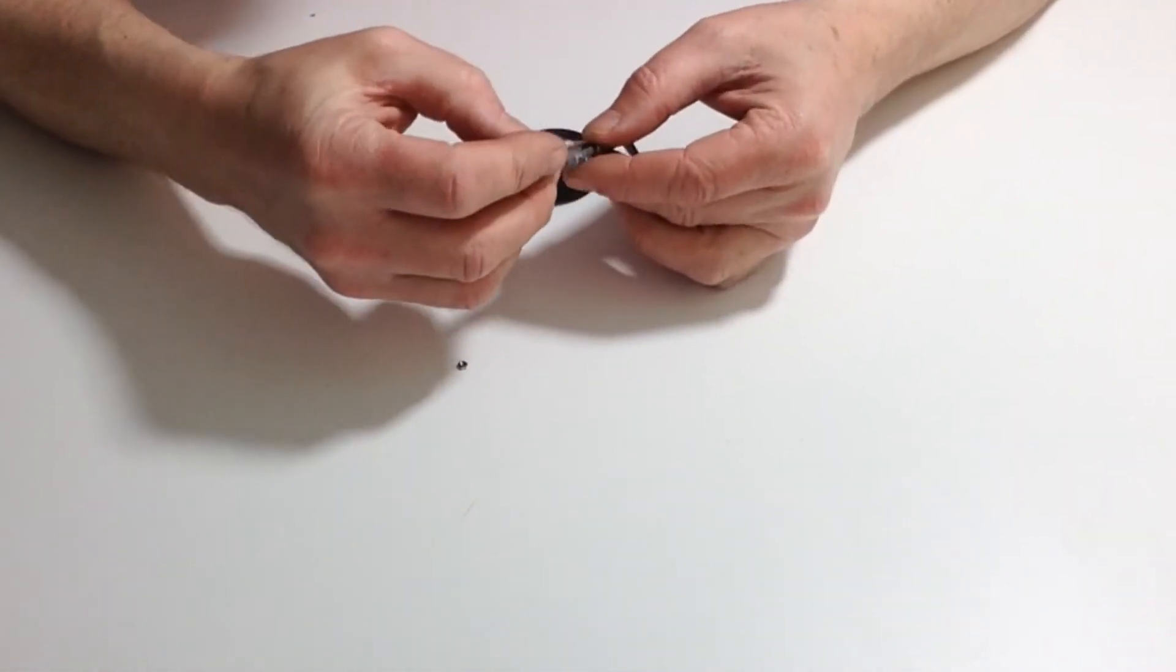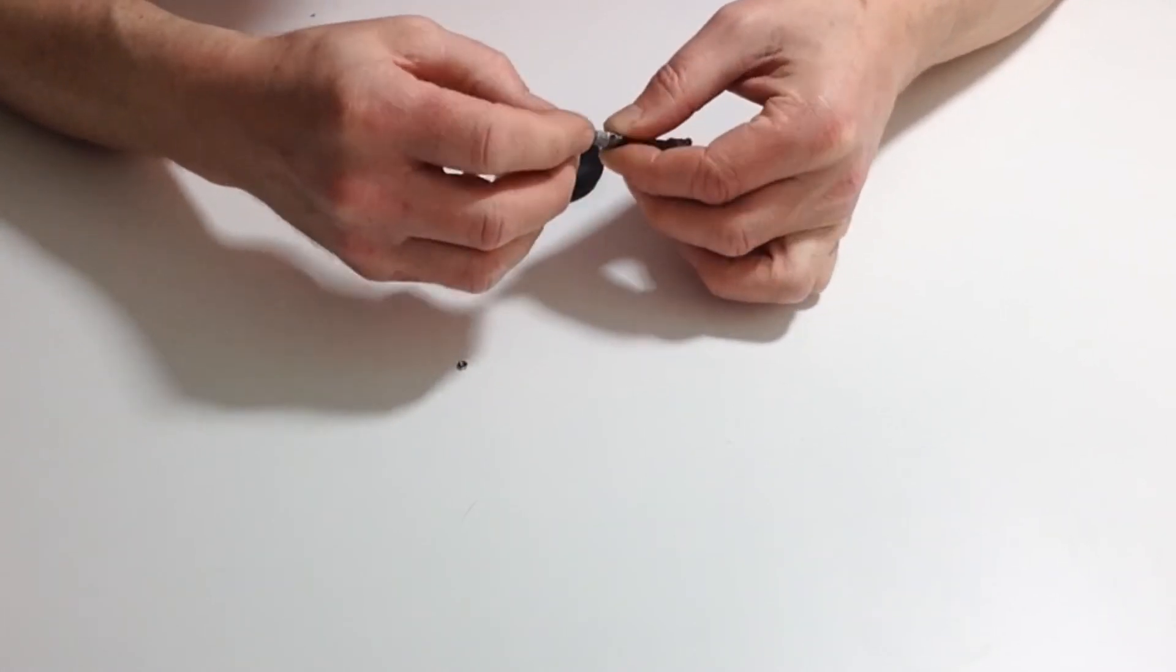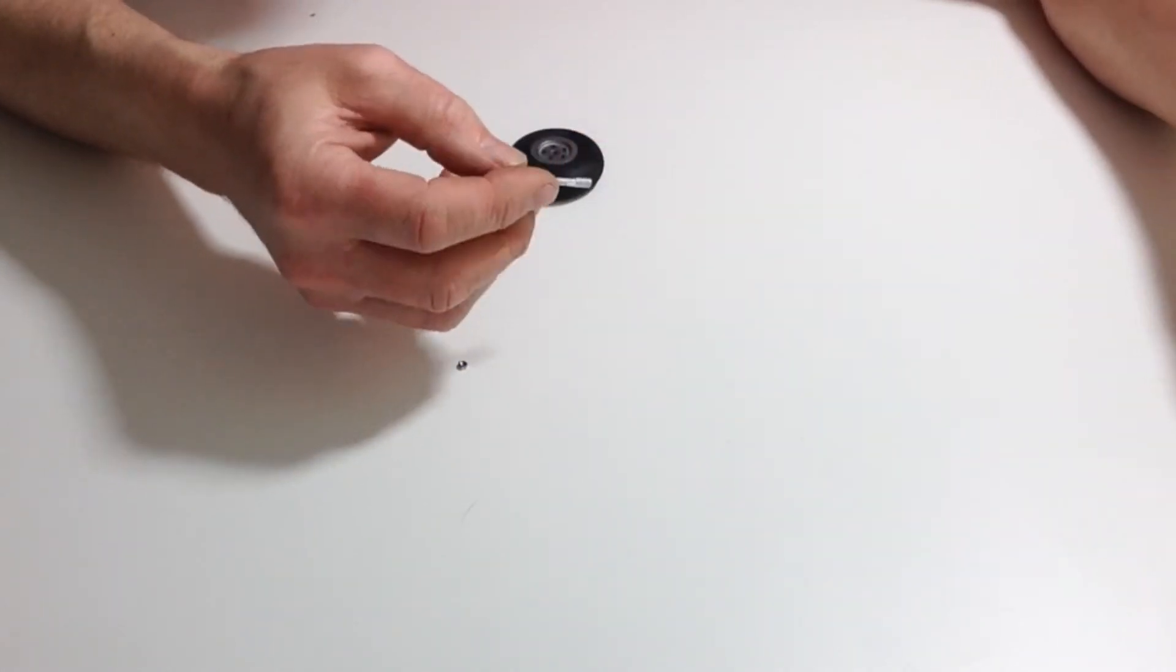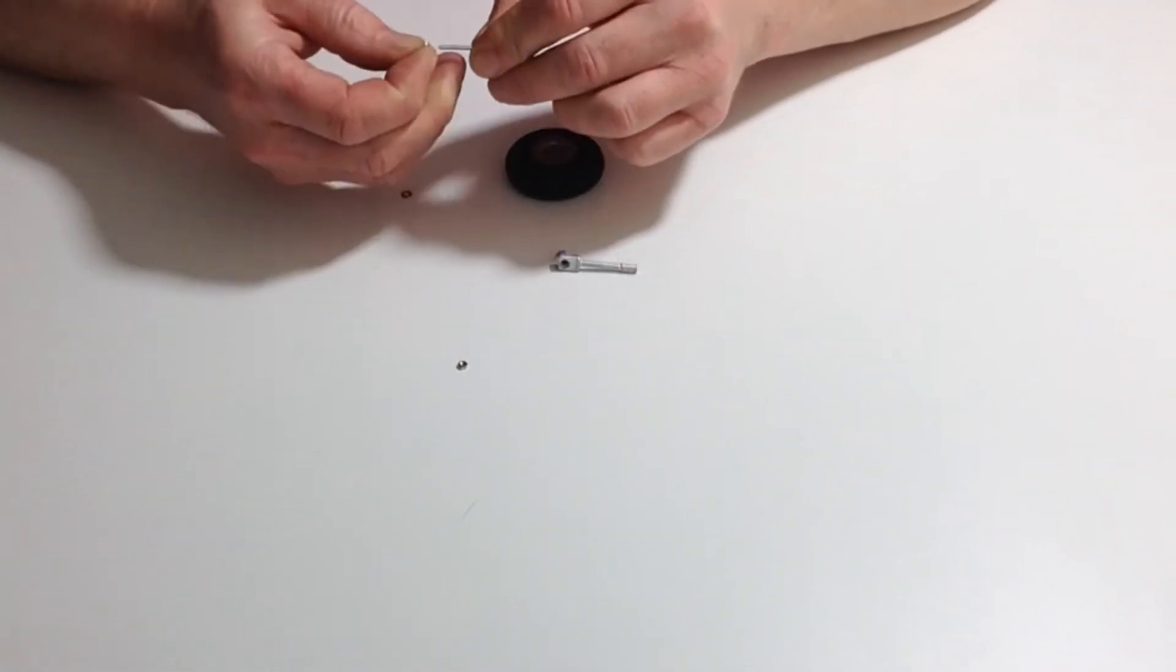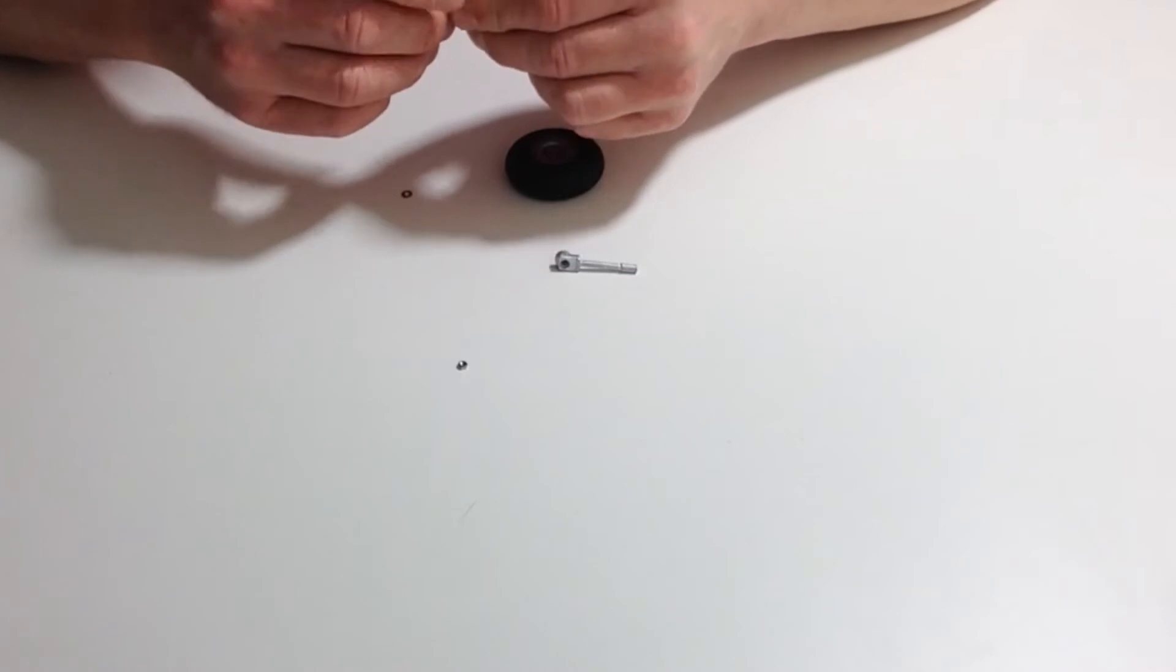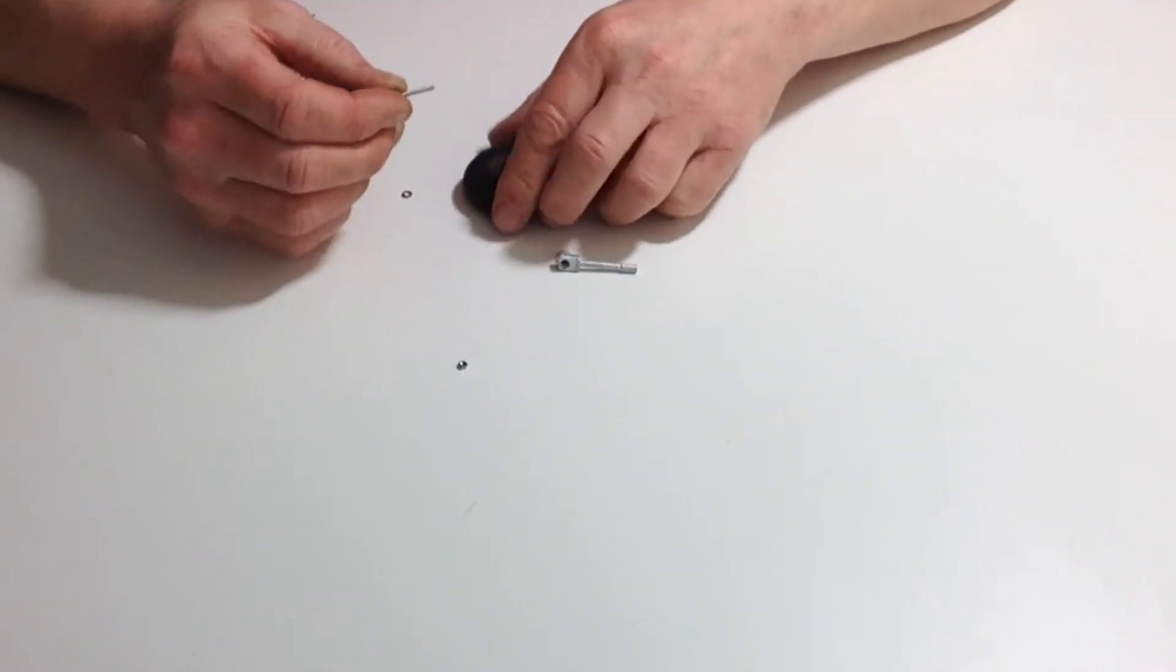Now take the struts from the previous issue and test fit, making sure they move up and down inside the main strut shaft. Then take the screw that came with issue 65 and put one of the washers over it.